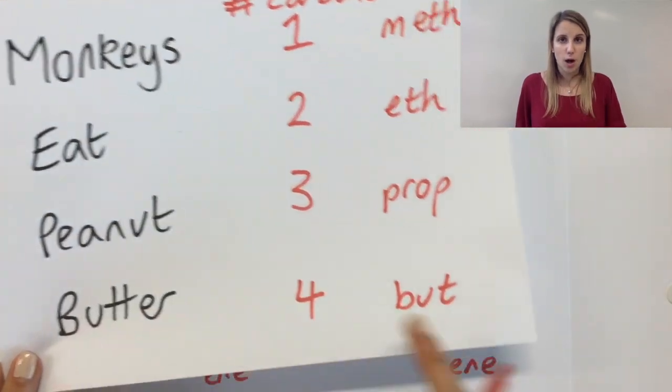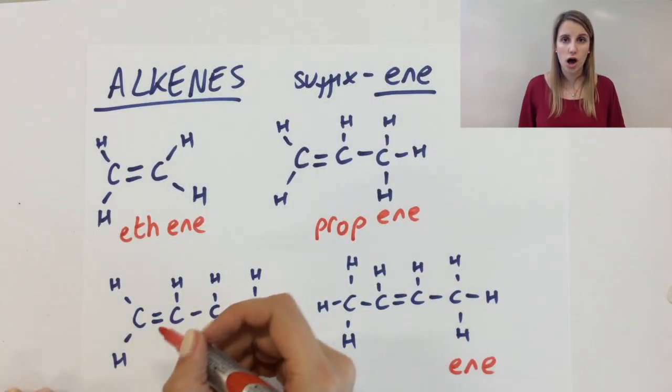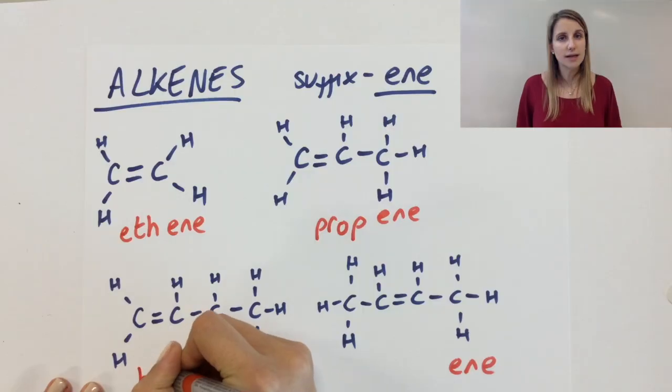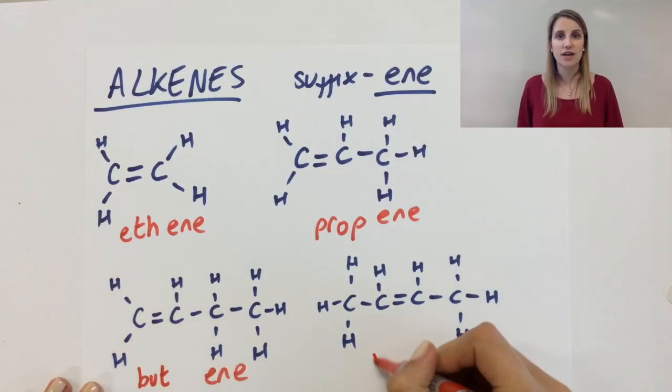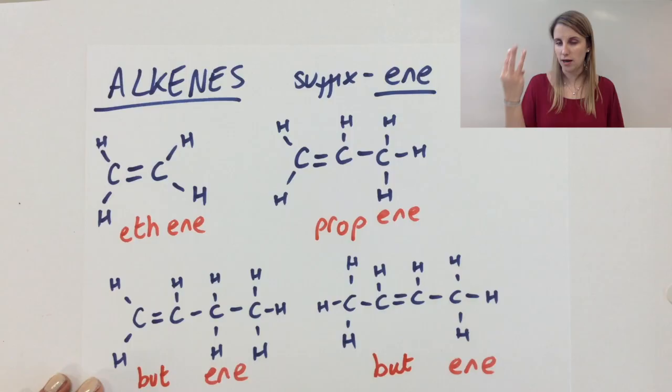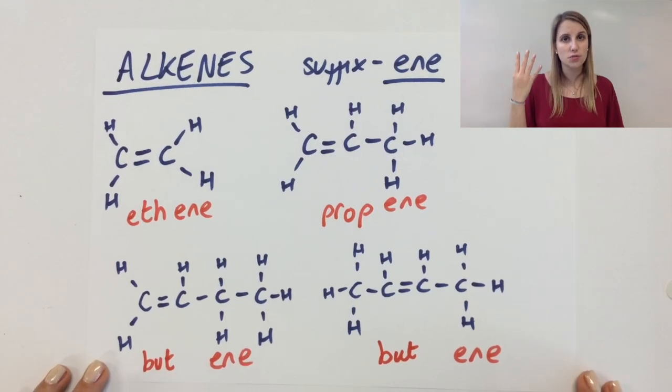The bottom two both have four carbons in them. So that means they're definitely going to use the prefix butte. Monkeys eat peanut butter. So but-ene.